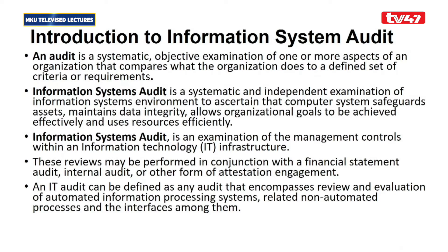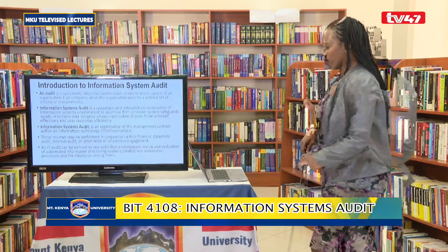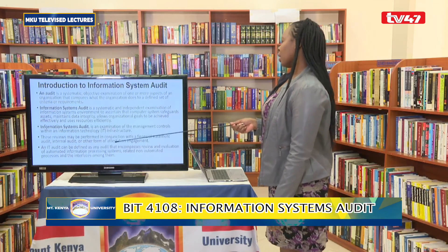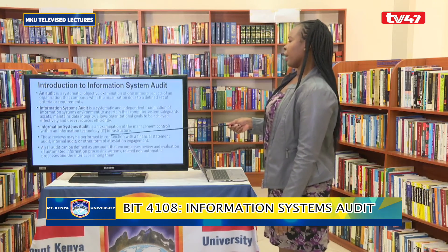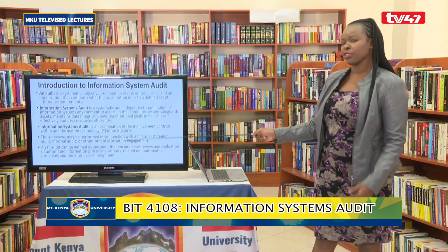If there is a conflict between what the information system does and the organization's goals, that means the information system is not appropriate. We also check whether IT systems ensure optimum use of resources within the organization. In summary, IS Audit is an examination of information systems.